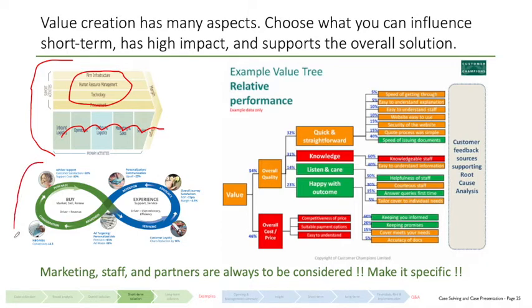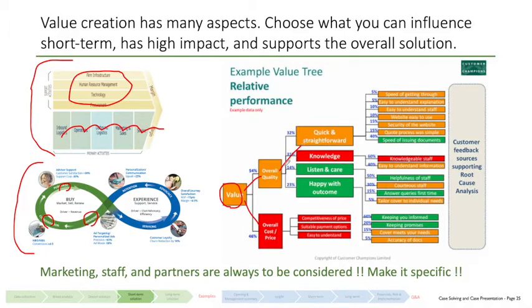A second model to use as a thinking process would be the buying experience model — thinking through how the customer gets aware of our product, how he considers us, how he actually purchases it, and then the equivalent on the customer experience side. A more mathematical way is to look at the value we create and break it down: value is quality related to cost or price. Quality includes being easy to use, quick, straightforward, the knowledge that our staff has, how much our staff listens to the customer, and whether the customer is happy with the outcome. Each of those can be broken down further.